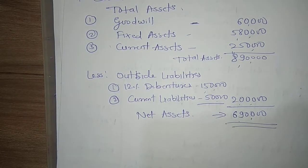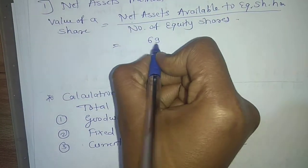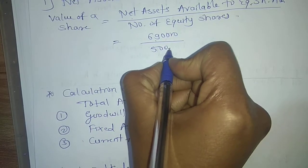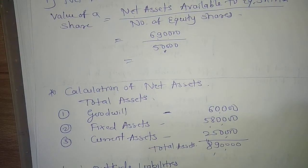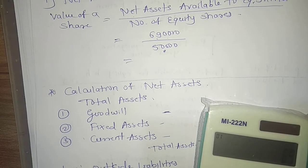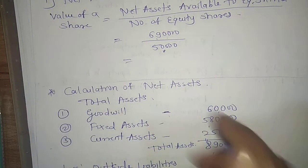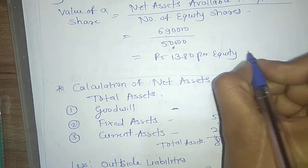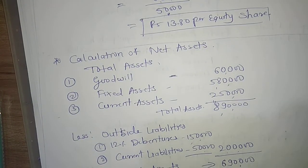Using this value, we calculate the value of a share under the net asset method: 6 lakh 90,000 divided by number of equity shares. From Note 1, there are 50,000 equity shares of rupees 10 each. So 6 lakh 90,000 divided by 50,000 gives rupees 13.80 per equity share.